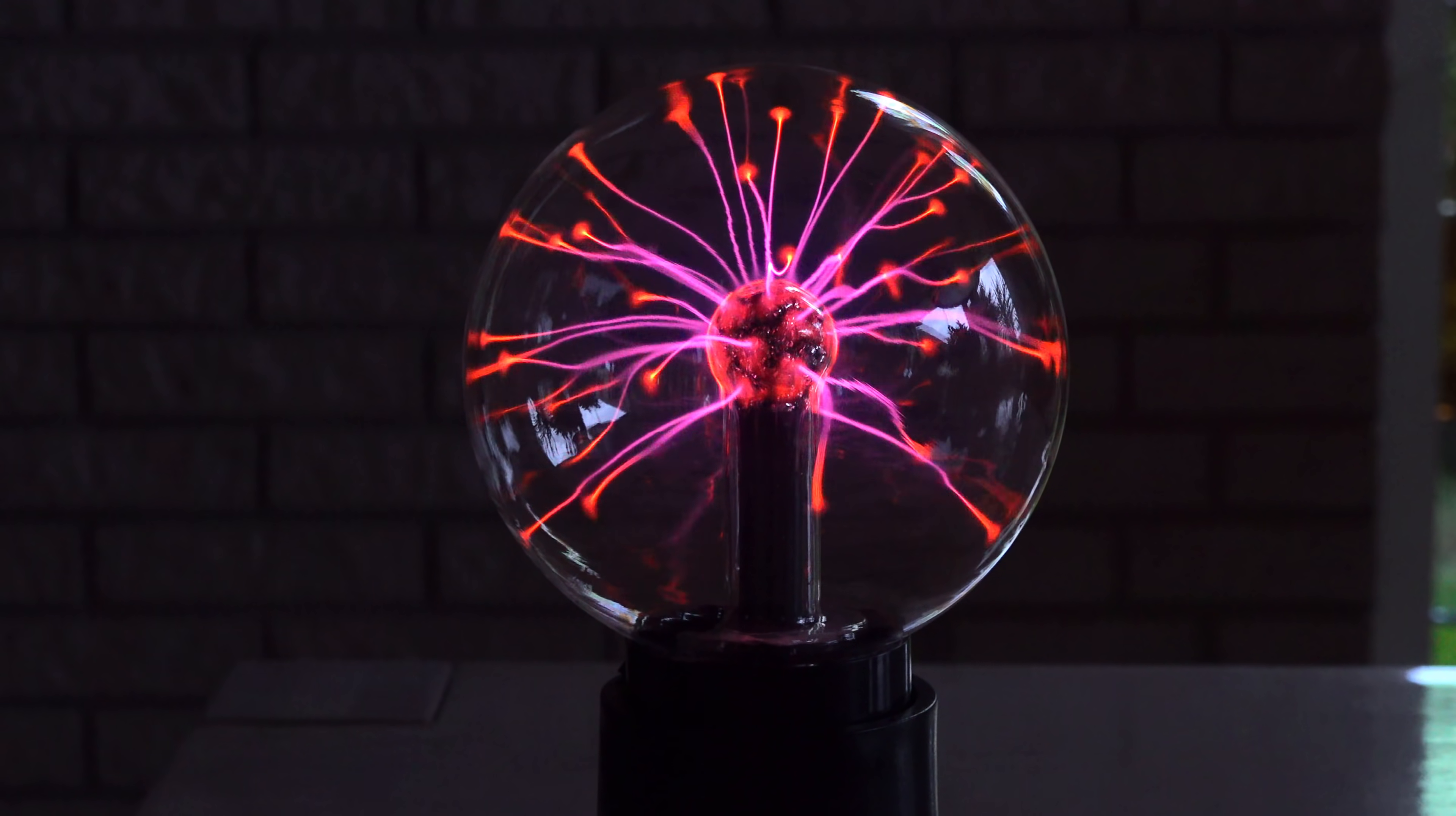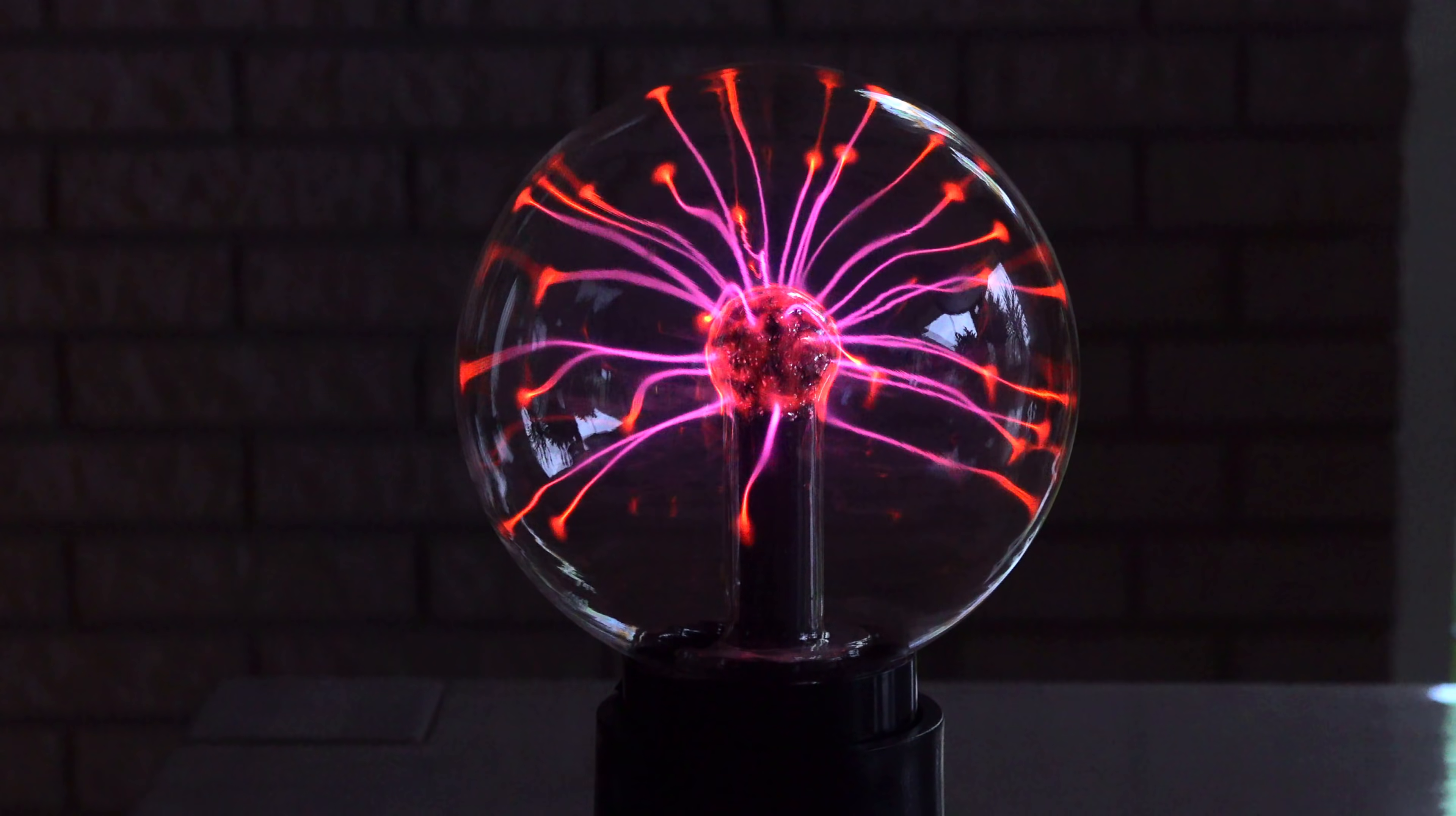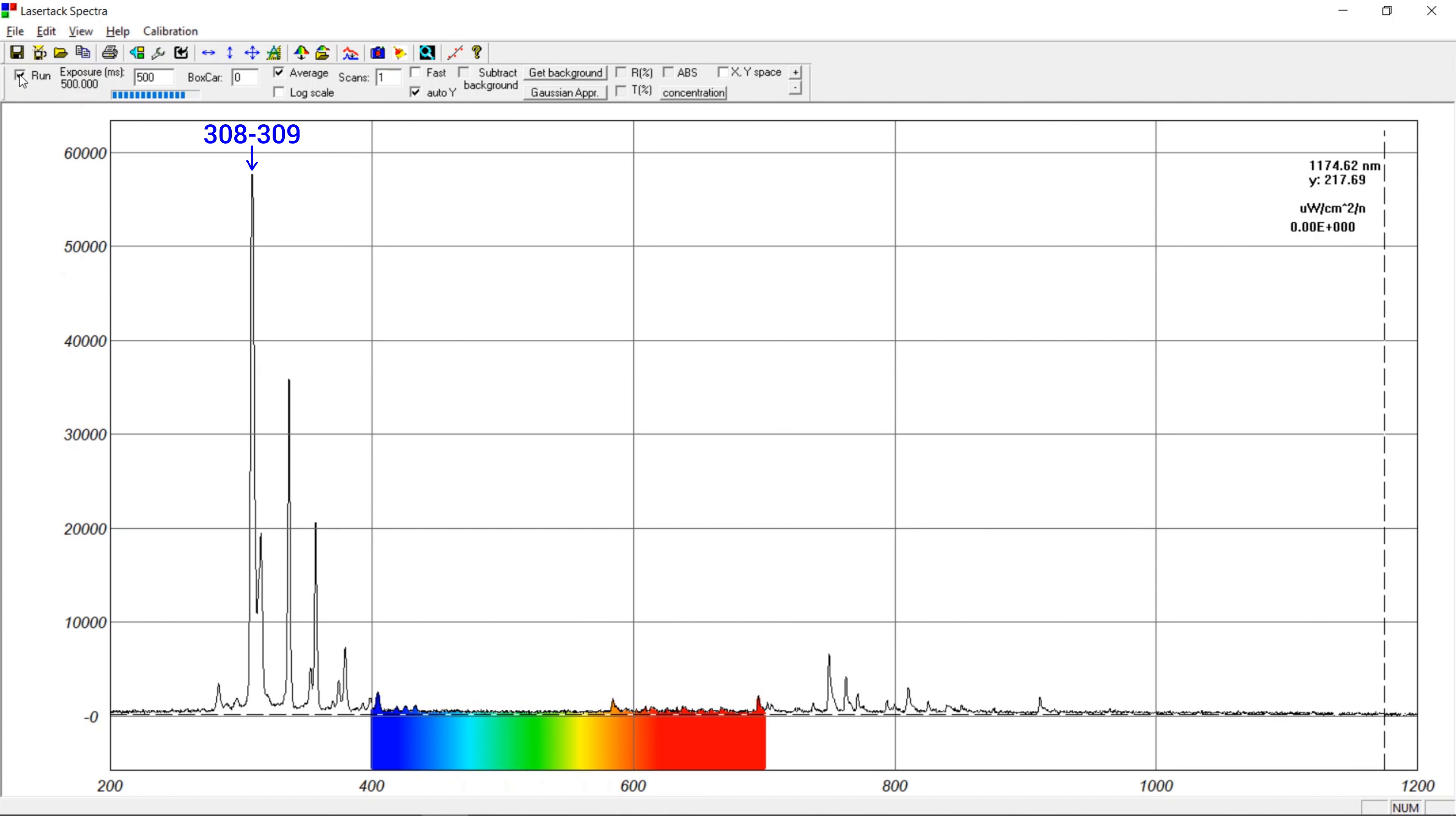Though it does look pretty. I'm not sure about the origin of the big UV peak around 308 to 309 nanometers. My guess is hydroxyl being generated from water vapor by the nitrogen plasma. Comment with your guess.